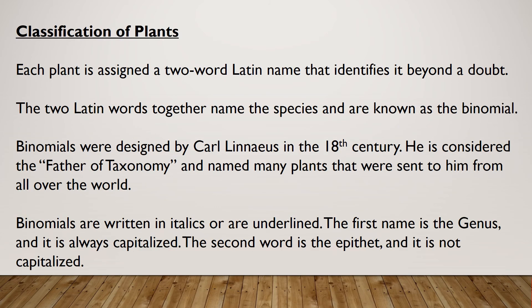Each plant is assigned a two-word Latin name that identifies it beyond a doubt. The two Latin words together name the species and are known as the binomial. Binomials were designed by Carl Linnaeus in the 18th century — he is considered the father of taxonomy and named many plants sent to him from all over the world. Binomials are written in italics and are underlined. The first name is the genus and is always capitalized; the second word is the epithet and is not capitalized.